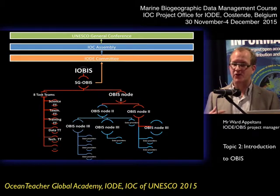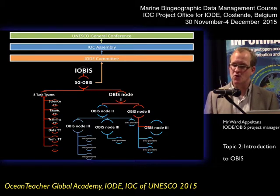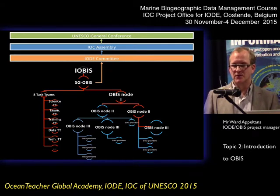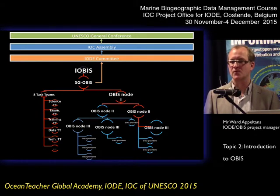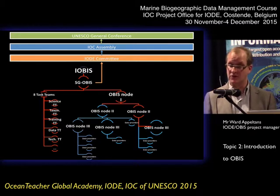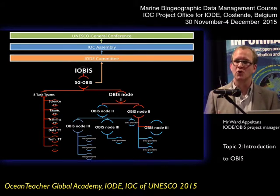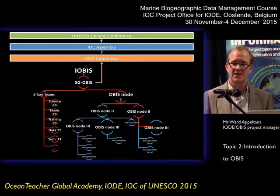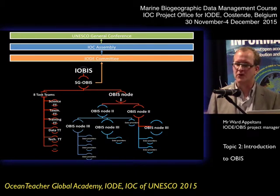Members of the task teams don't necessarily need to be part of the OBIS nodes — we can invite external experts. We have a three-tier structure of OBIS nodes. The central international OBIS node is Tier 1. We have Tier 2 OBIS nodes and Tier 3 OBIS nodes. Tier 2 nodes have a bit more responsibility in terms of quality control, and they also have a mentoring role for Tier 3 nodes. New nodes often come in as Tier 3 and have a parent Tier 2 to assist them, and after some time they can become a Tier 2.